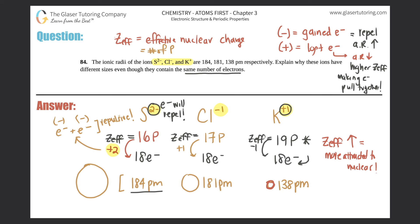When you gain electrons they repel each other, so the atom gets bigger. But if you lose electrons, the remaining electrons become more attracted because effective nuclear charge is higher than the number of electrons. Cl⁻ is in the middle — it only added one electron, so there's some repulsion but not as much as when two electrons were added like in S²⁻.